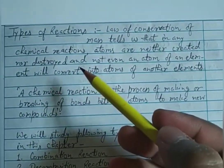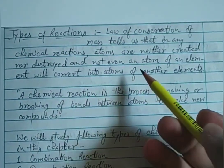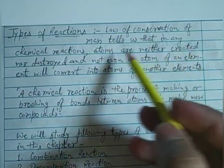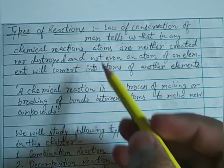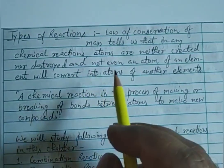In class 9th, when we studied about laws of chemical reactions, we learned about the law of conservation of mass. This law tells us that before and after any chemical reaction, the mass never changes - mass is neither destroyed nor created.